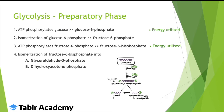Glucose 6-phosphate is then isomerized into fructose 6-phosphate. Then one more ATP is used, producing fructose 1,6-bisphosphate — so now it has two phosphate groups. Finally, because fructose 1,6-bisphosphate is unstable, it breaks down into two 3-carbon molecules.